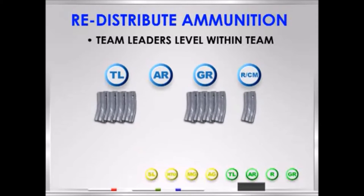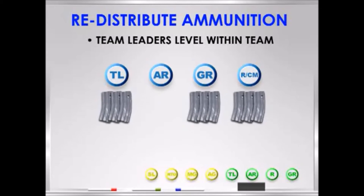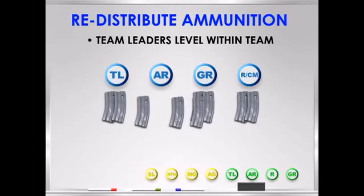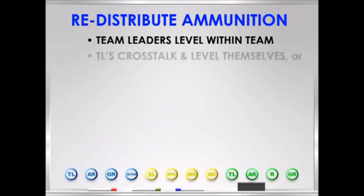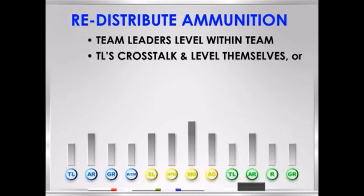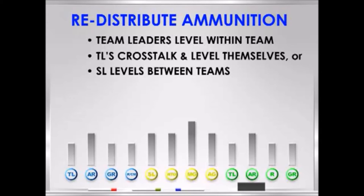For example, if the rifleman in the lead team has only one full magazine but the team leader and grenadier each have four full, they would each give up one magazine to the rifleman so everyone would now have three full mags. If the SAW gunner was out of ammo, each member of the team would give up magazines to him because the SAW provides a large portion of the team's firepower and can fire using M4 magazines. When each individual team has been leveled internally, the team leaders cross-talk and cross-level between teams, then give their count to the squad leader. If there is a big difference in the amount of ammo each team has, the squad leader will direct the team with the most ammo to give some up to the other team.